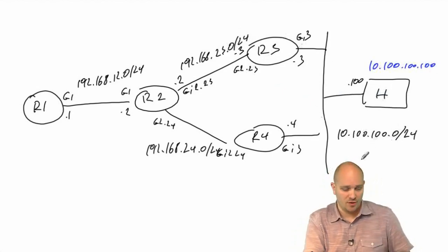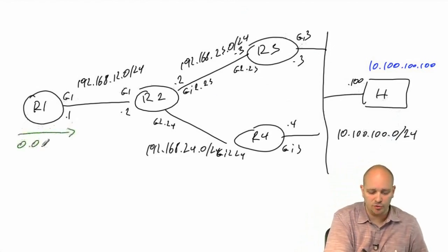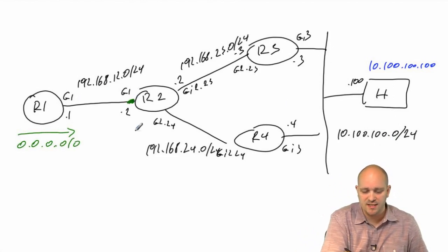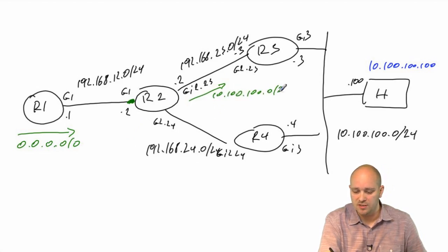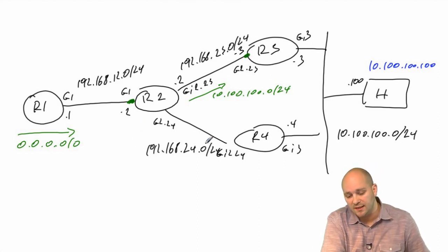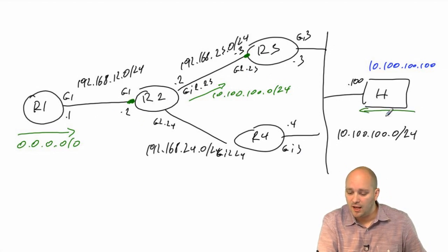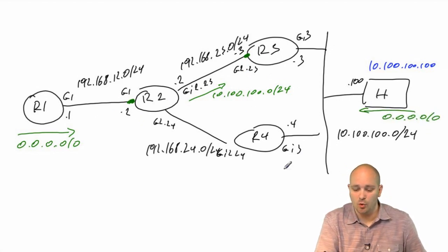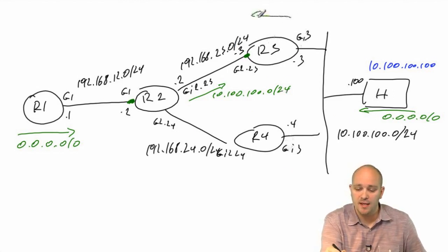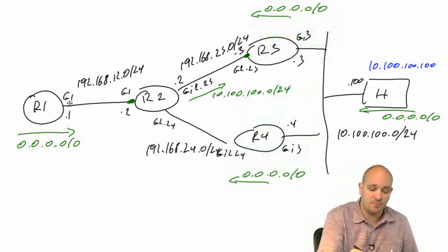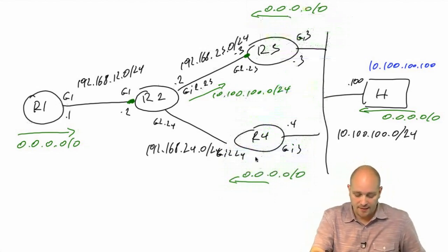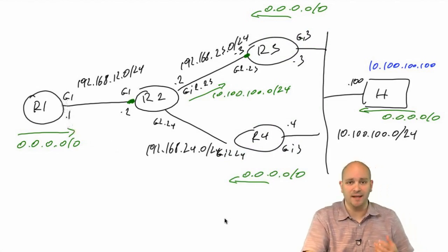For routing: R1 has a default route pointing toward R2. R2 has a static route for 10.100.100.0/24 pointing via R3 — not R4. The host has a default route back toward both R3 and R4. R3 and R4 each have a default route pointing back to R2. This setup ensures we can ping R1's interface from the host and vice versa.